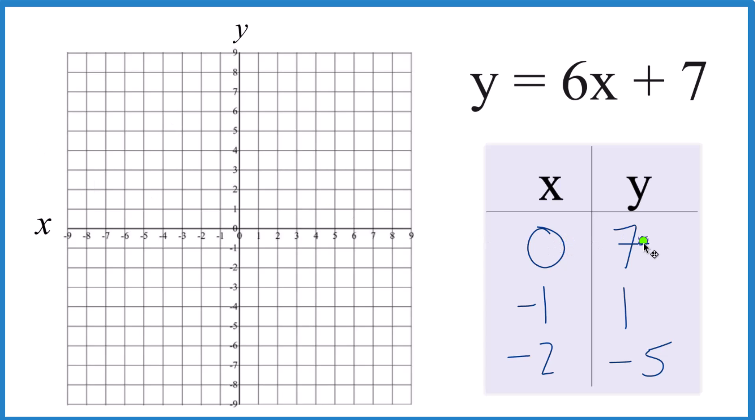So we have 0 is x, y is 7, right there. Then we have negative 1 for x, 1 for y. Negative 1, 1. I could just plot 2 points. I'd like to do 3, and you know you're right.